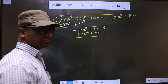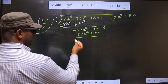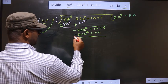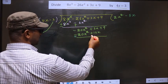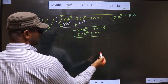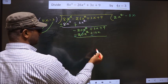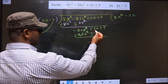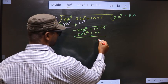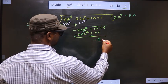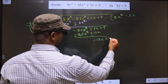Now we should change the signs. Here it is minus, you make it plus. Here it is plus, you make it minus. Now these cancel out. Plus 3x minus 15x is minus 12x, and we bring down plus 9.